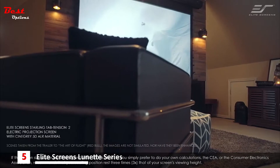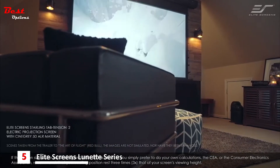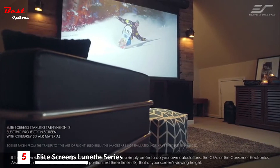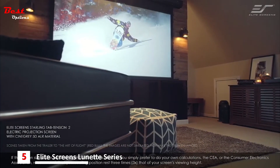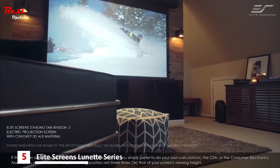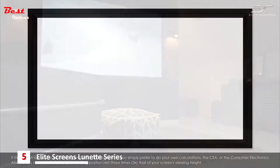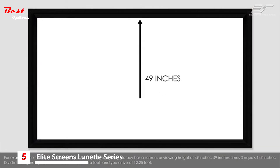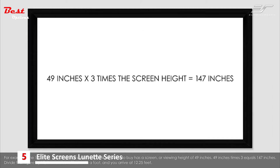If the screen size you're considering isn't listed on the chart, and you simply prefer to do your own calculations, the CEA, or the Consumer Electronics Association, recommends that your seating position rests three times that of your screen's viewing height. For example, the 100-inch 16x9 diagonal screen has a screen or viewing height of 49 inches. 49 inches times 3 equals 147 inches. Divide that figure by 12, the number of inches in a foot, and you arrive at 12 and a quarter feet.